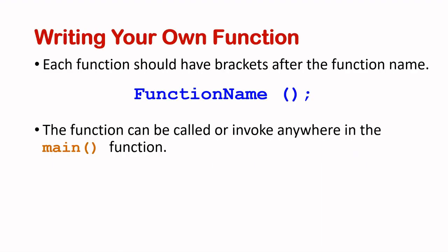Beside the predefined function, C allows you to write your own function. In writing your own function, you must provide a name for the function. In this example I just call it function name, but it should also include an open bracket and close bracket followed by a semicolon. This function can be called or invoked anywhere in the main function.